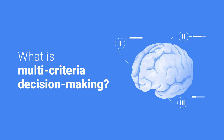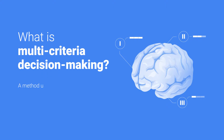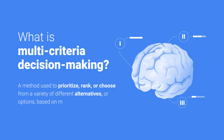So what is multi-criteria decision-making? MCDM, as it is often called, or also known as multi-criteria decision analysis, is a method used to prioritize, rank, or choose from a variety of different alternatives or options based on multiple criteria.